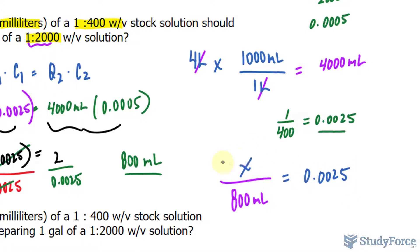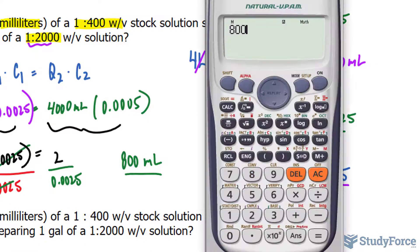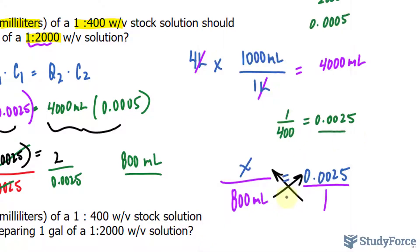Solving for X from here is easy. Rewrite this as a fraction as well. So we have X over 800 equals that fraction, and then cross multiply. 800 milliliters times 0.0025 makes 2, and 1 times X is X.